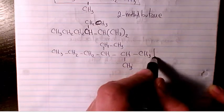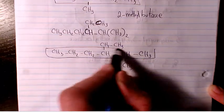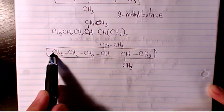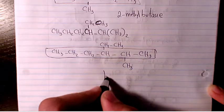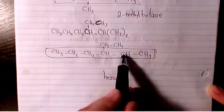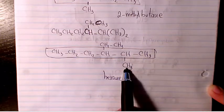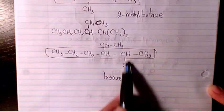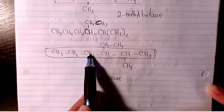Okay, we have the main chain here: one, two, three, four, five, six, so it's hexane. Do we need to start from this side or this side? We need to start from this side because the first substituent here is at position two, the other one is going to be at position four.